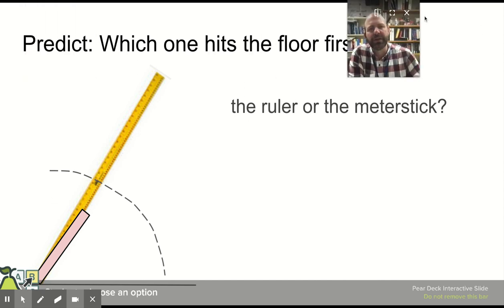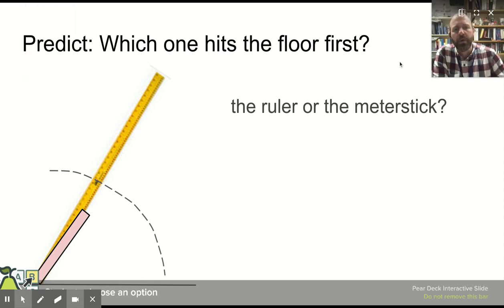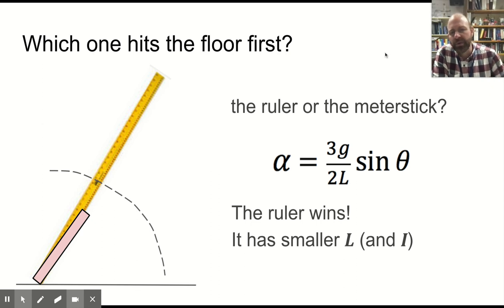So this is our last question. Which hits the floor first, the ruler or the meter stick? And the answer was the ruler wins because the angular acceleration, which depends on sine of theta, is also dependent on the length of the object. So the one that has the shorter length ends up winning.